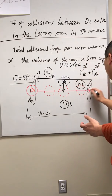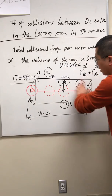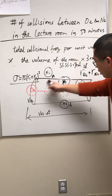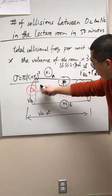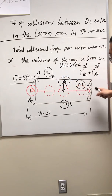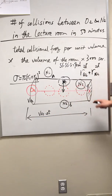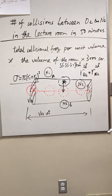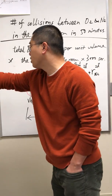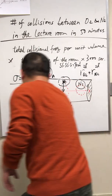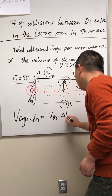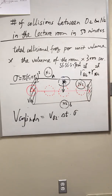Because we have a trajectory — not just a circle — we are looking at a cylinder. We need to count the number of nitrogen molecules with their centers residing inside this cylindrical volume. The volume of the cylinder is simply v_O2 times delta T times sigma, where sigma is the collisional cross-sectional area.